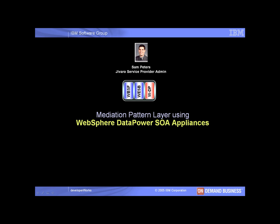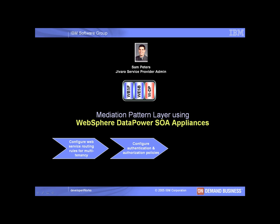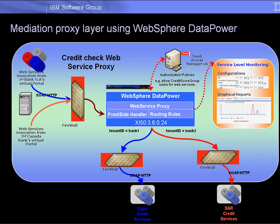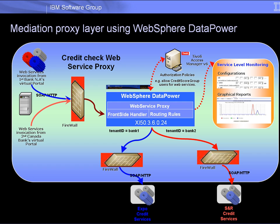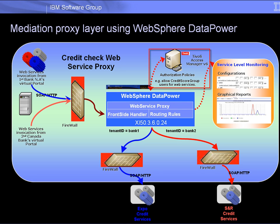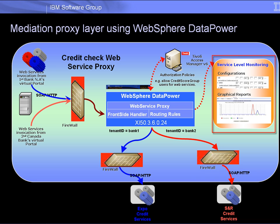We will now show how Sam Peters can use WebSphere DataPower to configure rules or policies for web service request routing, authorization, and monitoring and web services traffic shaping. We will show how Sam Peters creates a DataPower web service proxy with a front-side handler component and routing rules so that web service requests from First Bank and Second Bank customers are routed to the Expo and SNR credit check service endpoints respectively. We will also show how he integrates Tivoli Access Manager to configure access control policies and how he configures service level monitoring and web service traffic shaping rules in DataPower.